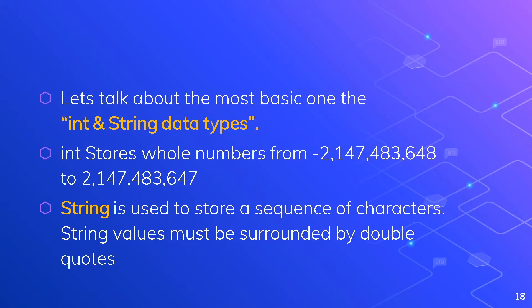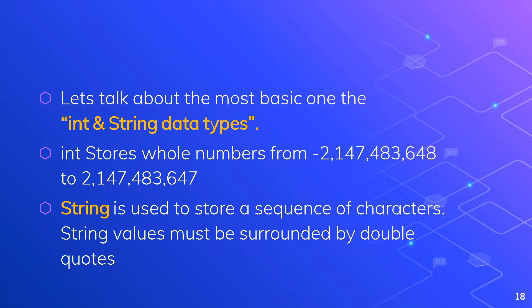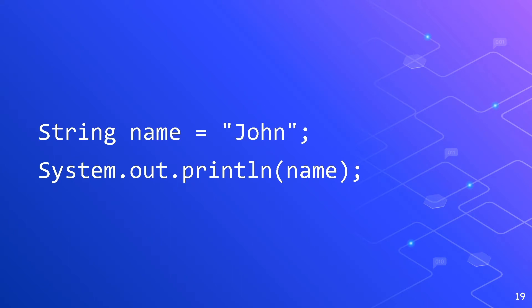Next is String. String is used to store a sequence of characters — the alphabets a, b, c, d up to z. String values must be surrounded by double quotes. For example, to declare a String: the type is 'String', the variable is 'name', and the value is 'John' in double quotes. Below, the statement 'System.out.println(name)' calls our variable 'name', and the output will be 'John'.